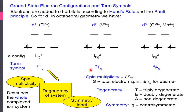Electrons are added to the d orbitals according to Hund's rule and the Pauli exclusion principle. According to Hund's rule, all the electrons are filled one electron each into each subshell, then pairing takes place. The Pauli exclusion principle states that no two electrons can have all four quantum numbers the same.